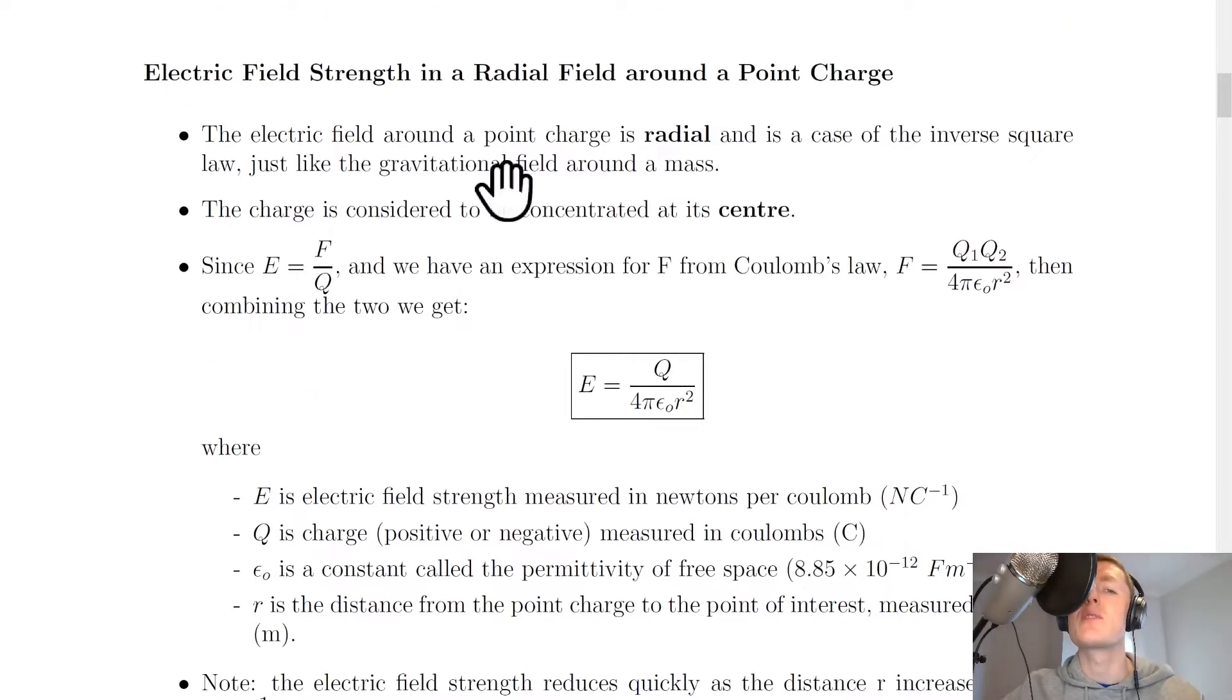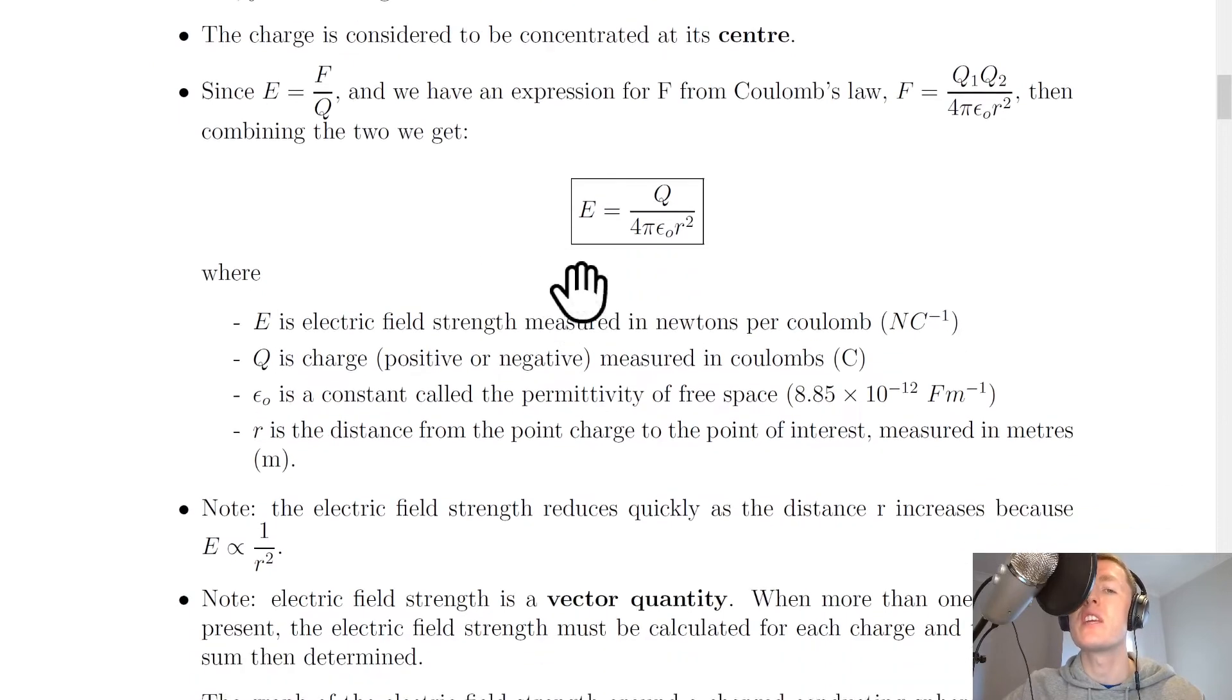Next we're going to look at the specific case of the electric field strength in a radial field around a point charge. The electric field around the point charge is radial and is a case of the inverse square law, just like the gravitational field around a mass. The charge is considered to be concentrated at its centre. Since E equals F over Q, and we have an expression for F from Coulomb's law, F equals Q1 Q2 over 4 pi epsilon not R squared, then combining the two we get E equals Q over 4 pi epsilon not R squared.